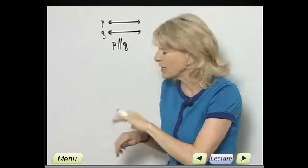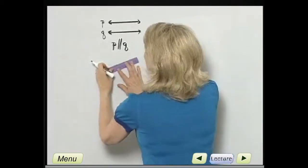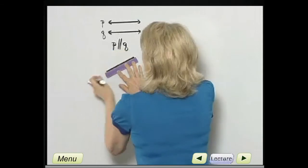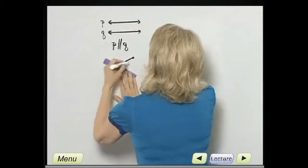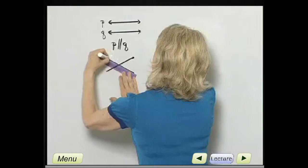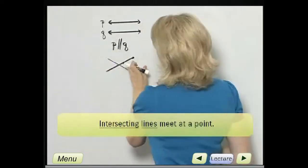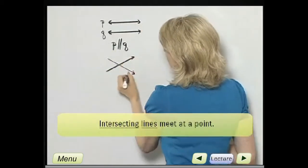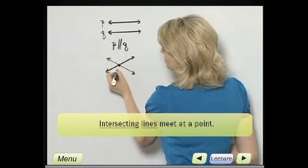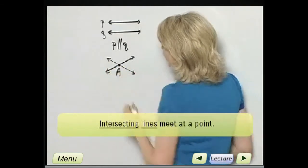So lines can be parallel or lines can basically intersect. And of course, two lines intersect in one point. So there we go. This is what two lines can do. These two lines, we'll just say they intersect at point A.